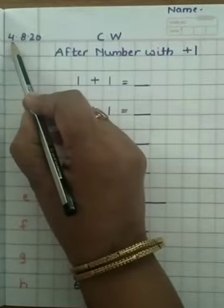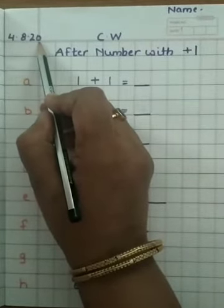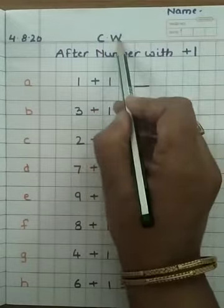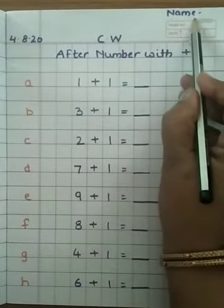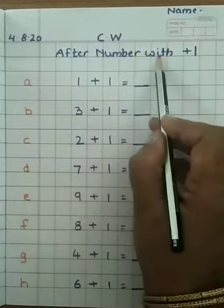Children, you have to write today's date, 4th of August 2020, classwork and your name. After number with plus 1.